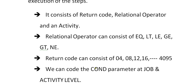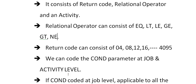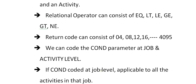The expected return code can be 0, 4, 8, 12, and so on up to 4095. We can code the COND parameter at job level and also at activity level. There are different ways of representing the COND parameter — at the job level and at the activity level.